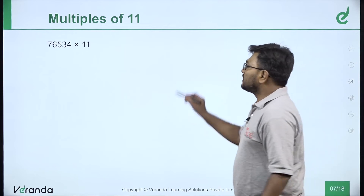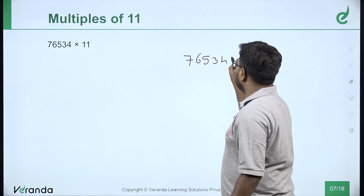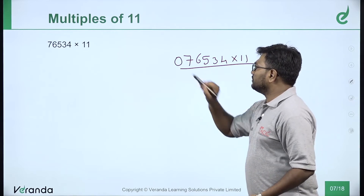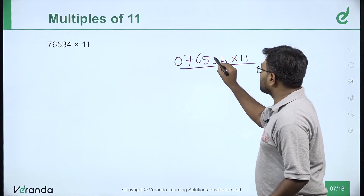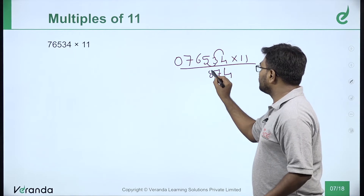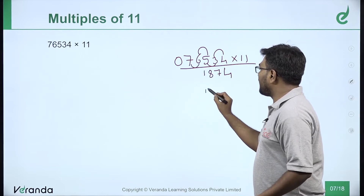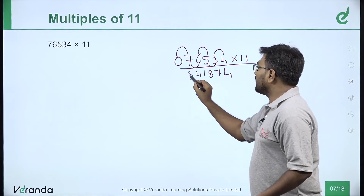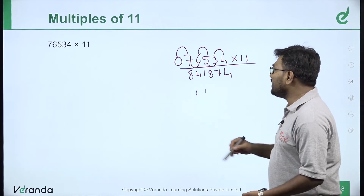This example: 76534 into 11. Add a 0. First digit stays the same — that's 4. Then 3 plus 4 is 7. Then 5 plus 3 is 8. Then 6 plus 5 is 11 — carry 1. Then 7 plus 6 is 13, plus 1 is 14 — carry 1. Then 0 plus 7 is 7, plus 1 is 8. Answer: 76534 into 11 is 841874.